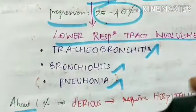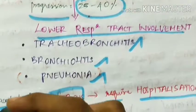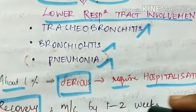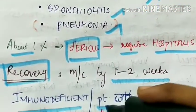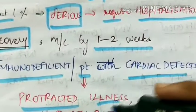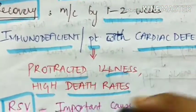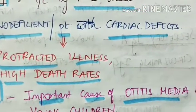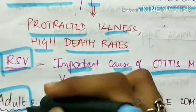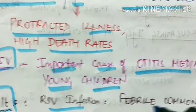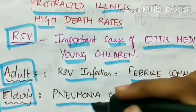In about 1 percent of cases, the infection becomes serious and requires hospitalization. Recovery from RSV infection most commonly occurs within 1 to 2 weeks, but in immunodeficient patients and those with cardiac defects, there is protracted illness with high death rates. RSV is also an important cause of otitis media, that is middle ear infection, in young children. In adults, RSV presents as a febrile common cold, and in elderly it can cause pneumonia.